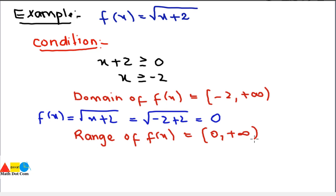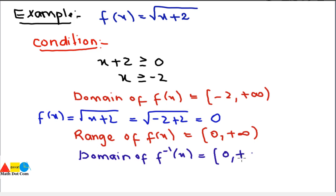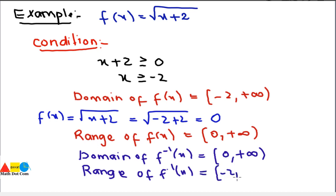Once you have the domain and range of the given function, you can easily find those of the inverse. Since the domain and range swap for f-inverse: the domain of f-inverse(x) = [0, +∞) and the range of f-inverse(x) = [−2, +∞).